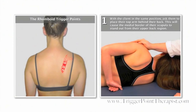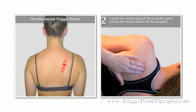To locate and release the trigger points in the rhomboid muscles, start with the client in the side-lying position and ask them to place their top arm behind their back. This will cause the medial border of the scapula to stand out from their upper back region. Locate the inside edge of the scapular spine along the medial border of the scapula — this is your landmark.